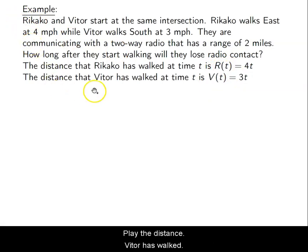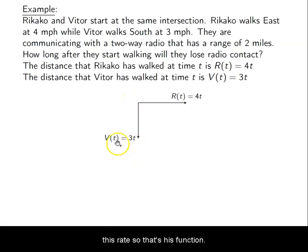The distance that Vitor has walked at time T is given by V(t). I use a V because Vitor's name starts with a V. And he walks at three miles an hour, so very straightforward that it's 3t. So that's two linear functions. From the point of intersection, Rikako walks east at this rate, so I can label it with this function. Vitor walks south at this rate, so that's his function.